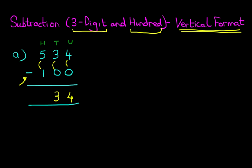And lastly, we have the hundreds. We've got 5 minus 1, 5 minus 1 is 4. So the only digit which has changed is the hundreds. So 534 minus 100 is 434.